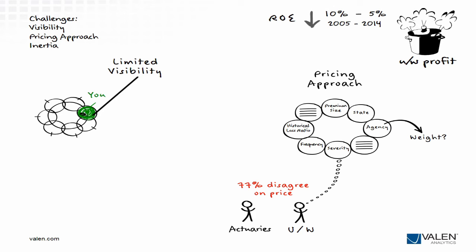When executives talk with us about how to solve these challenges around visibility and pricing, most admit they're concerned about how to overcome corporate inertia and institutional bias. The last thing they want to do is lead a large change initiative and end up alienating their agents, analysts, actuaries, and underwriters.